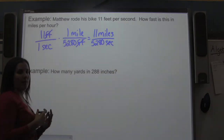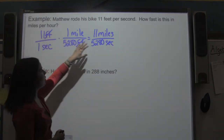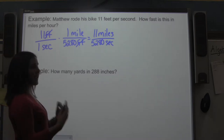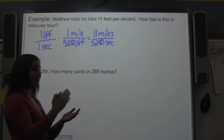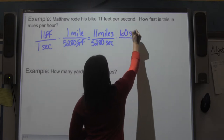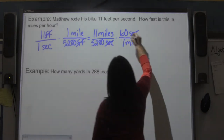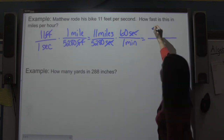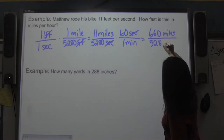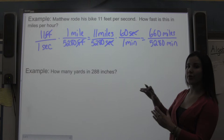In the last problem we only had one unit; here we have two. I've changed 11 feet per second to 11 miles per 5,280 seconds. Now I need to go from seconds to hours, but I can't skip the middle step of minutes. There are 60 seconds in one minute — the seconds cancel, and I'm left with 11 times 60, which is 660 miles per 5,280 minutes.